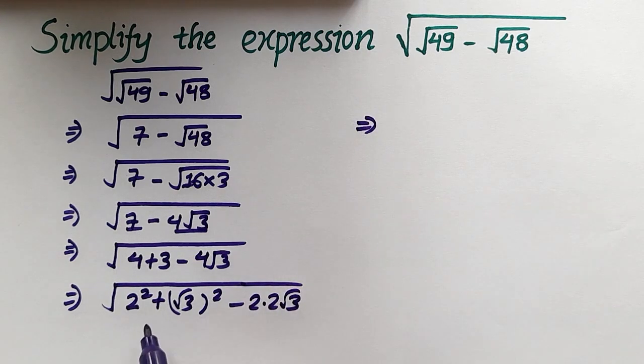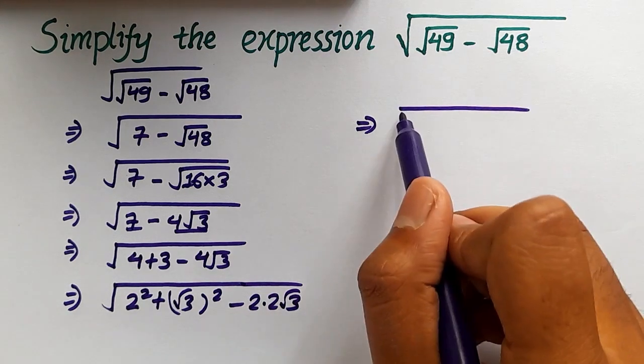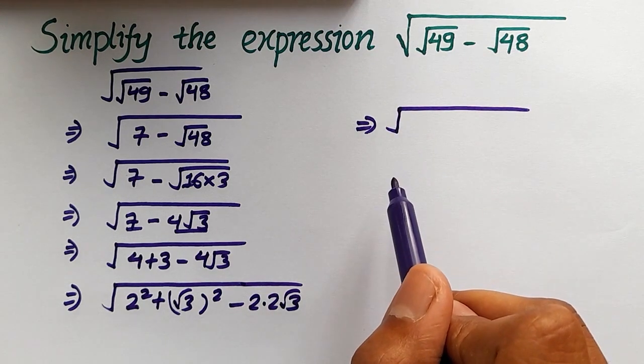This is in the form a² + b² - 2ab, which is the formula for (a - b)².